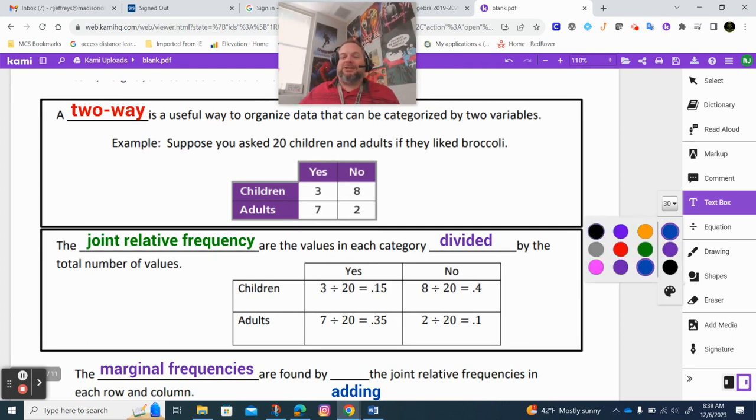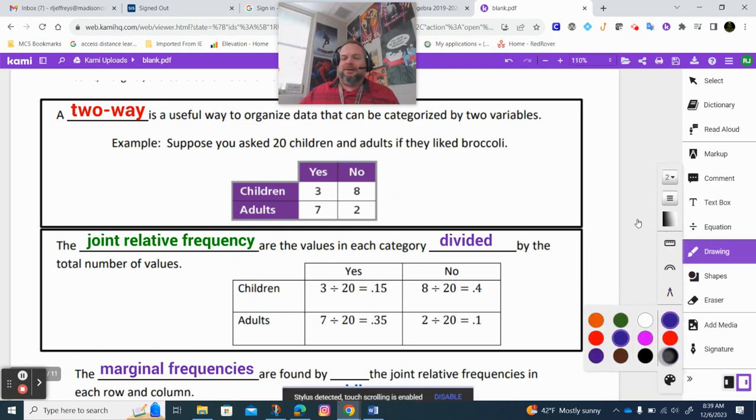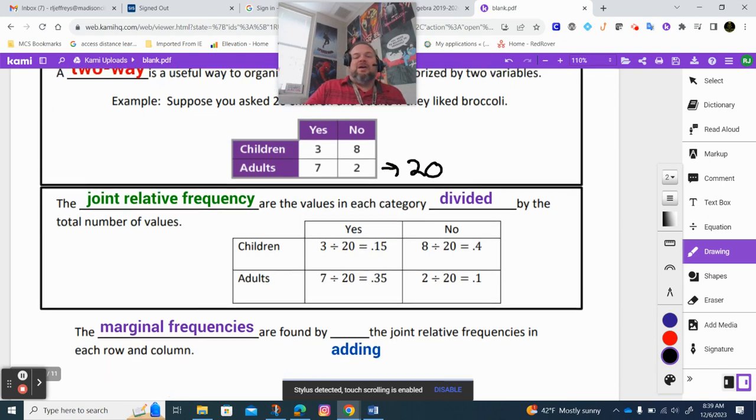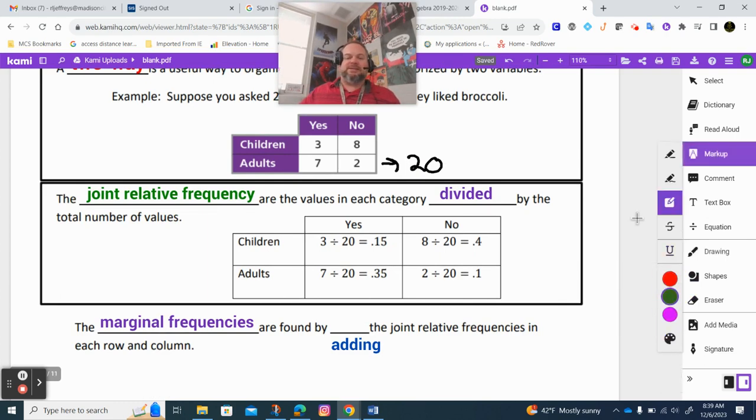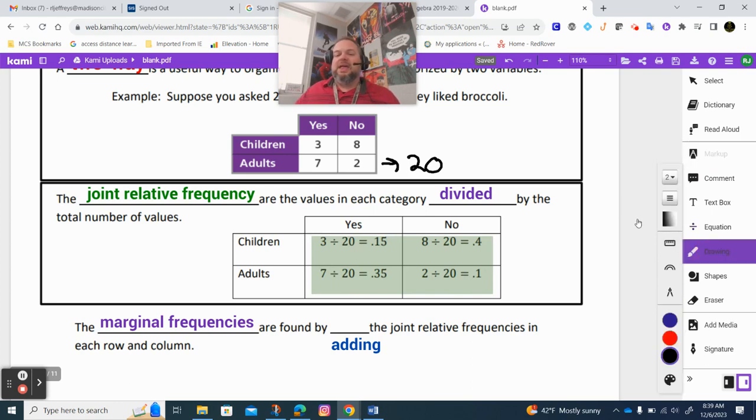So now, in this problem, they actually tell you there are 20. Now, our joint relative frequency, okay? Our joint relative frequency is all this stuff right here. That's the values in each category divided by the total, okay?